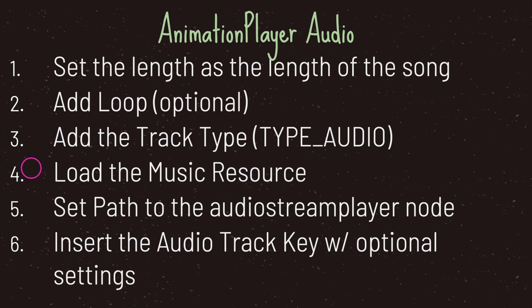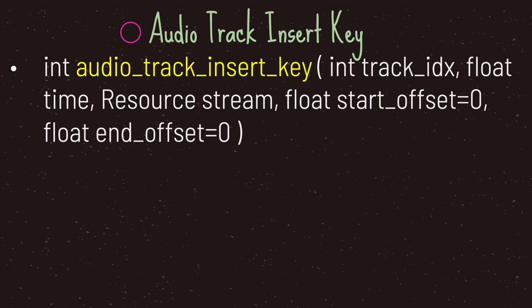Next you need to load your music resource into a variable. Then you need to set the path to your AudioStreamPlayer node, because to play your music you're going to need either the AudioStreamPlayer node or the AudioStreamPlayer2D node. Lastly, you need to insert the audio track key with your track index value, which holds your track type set to type audio. The one method you should focus on understanding for audio tracks in the animation player is called the audio track insert key method.